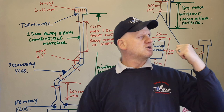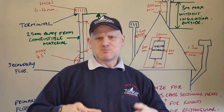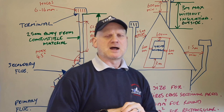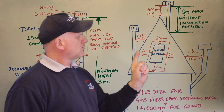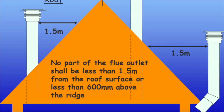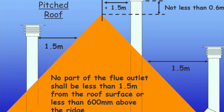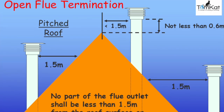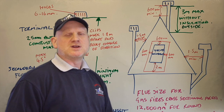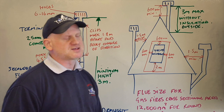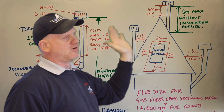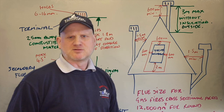When exiting the building, let's look at the positioning of the flue off the pitch of the roof. From the side of the flue to the roof on a horizontal plane, you need more than 1.5 metres away. At the top, we need to go above the ridge more than 600mm. Those are the major things to look out for when open flued appliances are exiting through the roof.